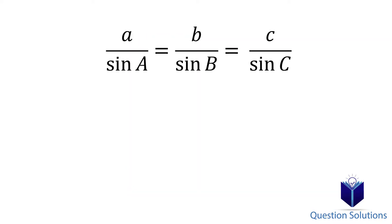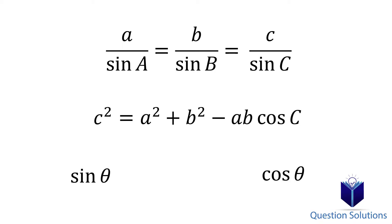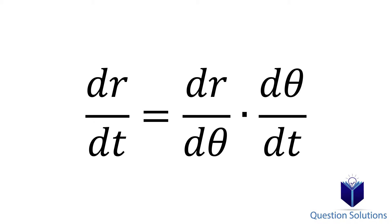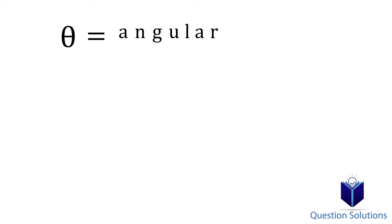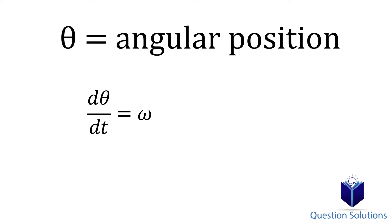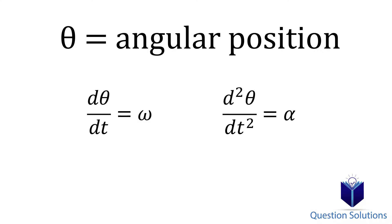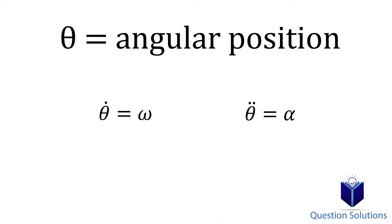We're going to be using a lot of trigonometry to relate angles and lengths. We also need to remember the chain rule from calculus — if you need a refresh, please check the description. One last thing to remember is derivatives of angular position: one derivative of angular position gives us angular velocity and a second derivative gives us angular acceleration. Instead of writing dθ/dt, we will use a theta symbol with a dot on top for angular velocity, and theta with two dots on top for angular acceleration.